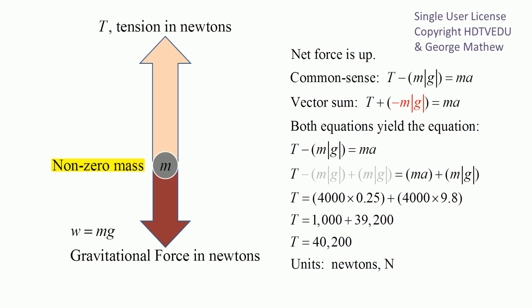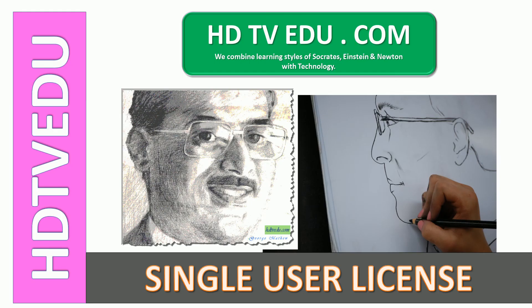If we are asked to draw the free-body diagram, we isolate the non-zero mass and look at the forces acting on it. We have tension within the cable acting vertically up, and gravitational force acting vertically down. So T minus mg equals ma. This is George Matthew signing off. Good luck.